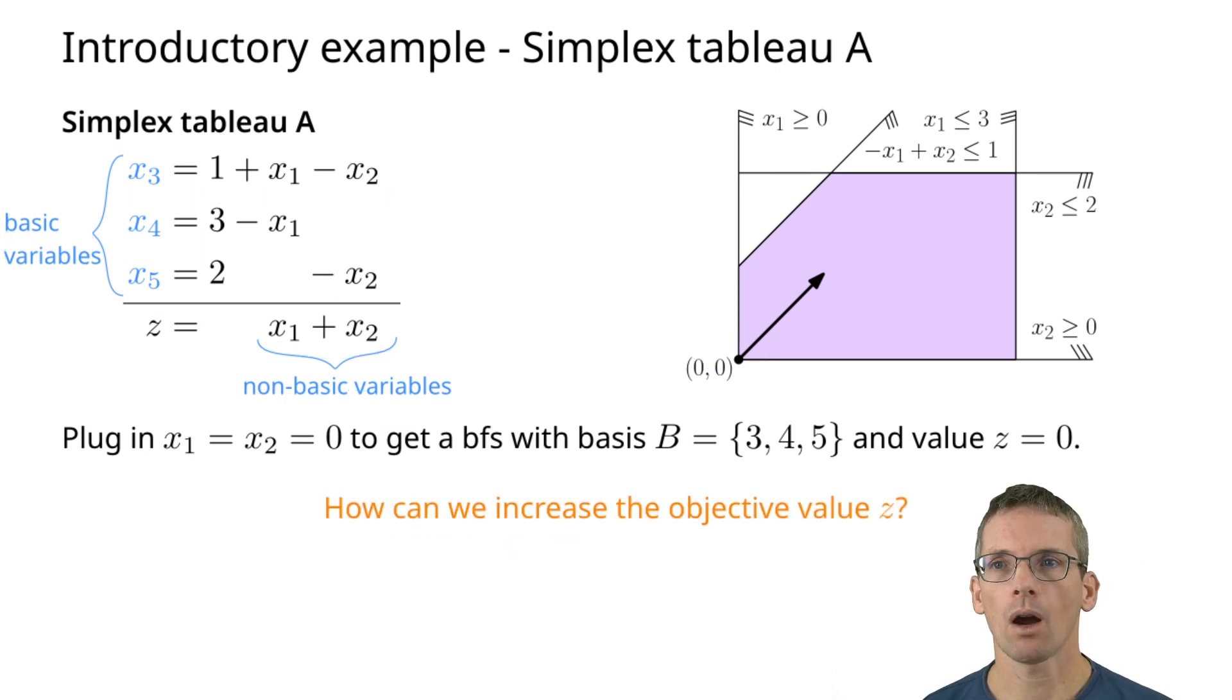How can we increase the objective function? The objective value z that we will want to increase either x1 or x2, which also means we want to take either x1 or x2 out of the non-basic variables and swap them into the basis. This will be a so-called pivot step. We're going to take one of these down here.